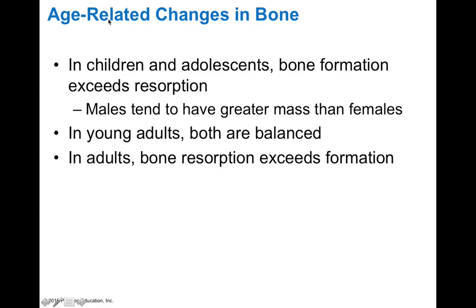In terms of age-related changes in bone, in children and adolescents bone formation exceeds resorption. Males tend to have greater bone mass on average than females. In young adults both are well balanced — resorption and deposition are in equilibrium. However, in adults as we age, bone resorption exceeds formation and eventually bones become brittle. One way to prevent excessive bone resorption is to use your bones — the biological adage is 'use it or lose it.' Using your bones throughout adulthood prevents resorption and prevents bone weakening.